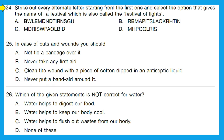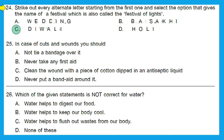Question 24: strike out every alternate letter starting from the first one and select the option that gives the name of a festival also called the festival of lights. That festival is Diwali. Performing the exercise on each option: option A gives 'wedding,' option B gives 'Desaki,' option C gives 'Diwali,' and option D gives 'Holi.' So option C is the right answer.